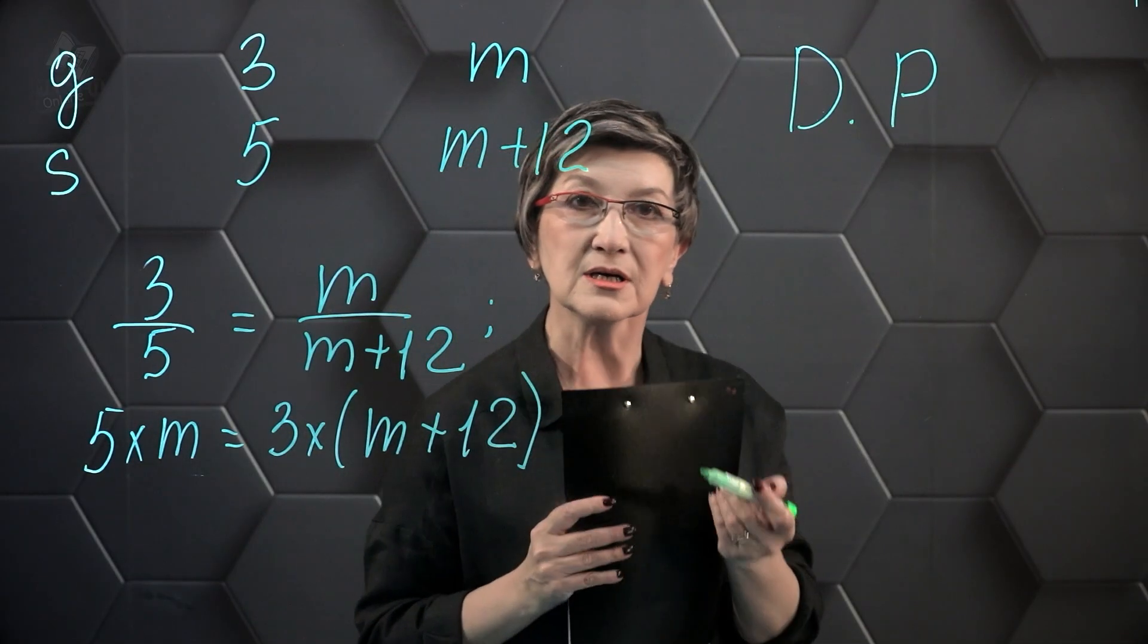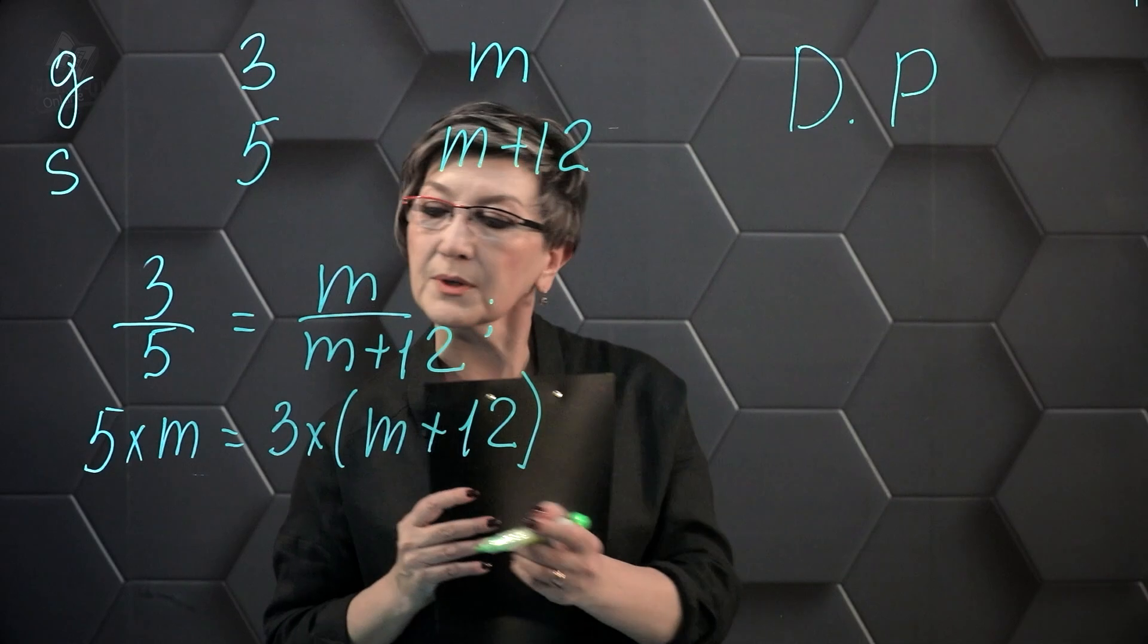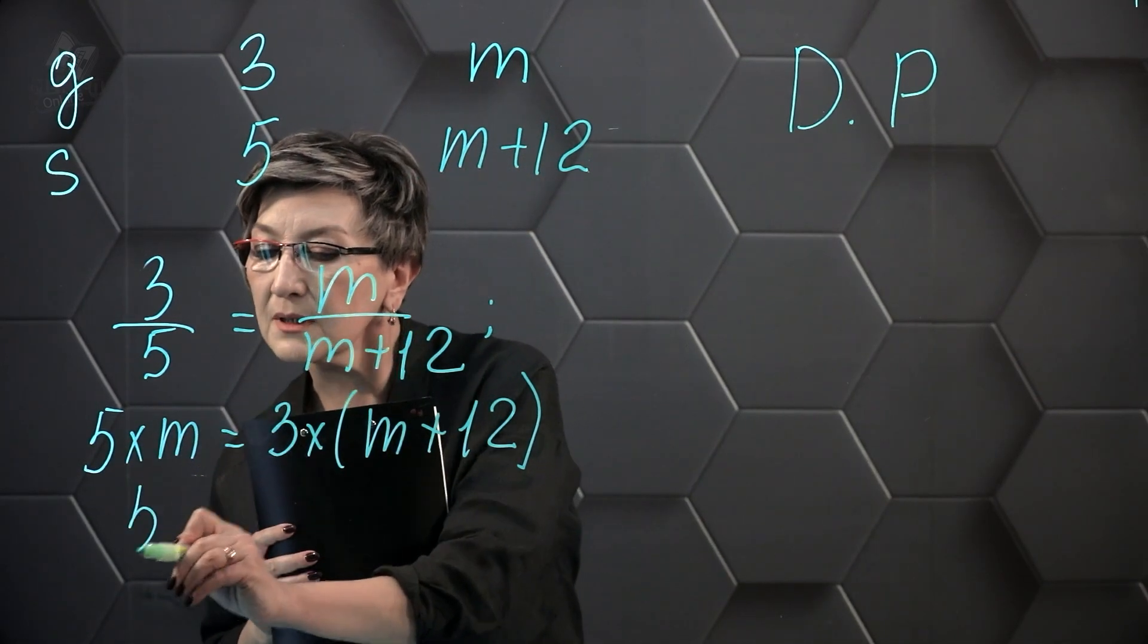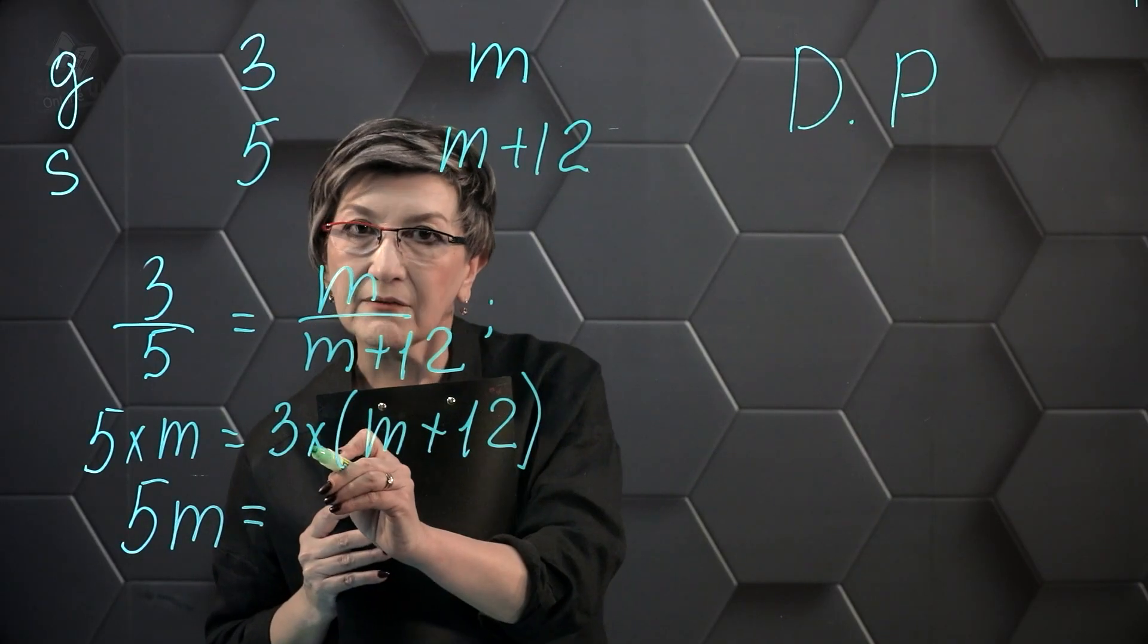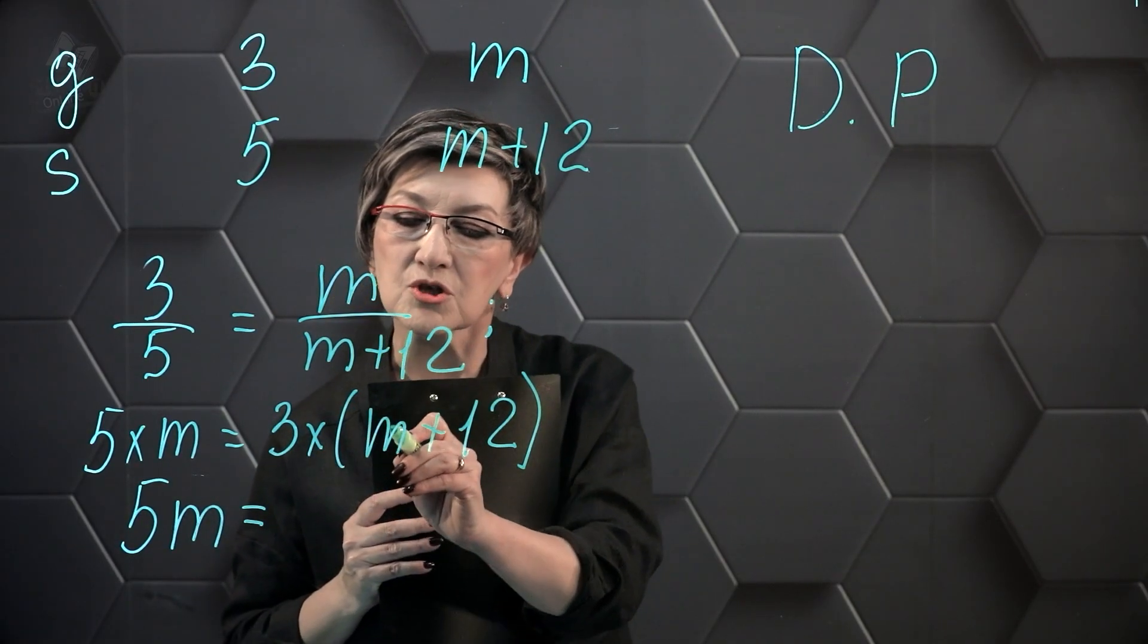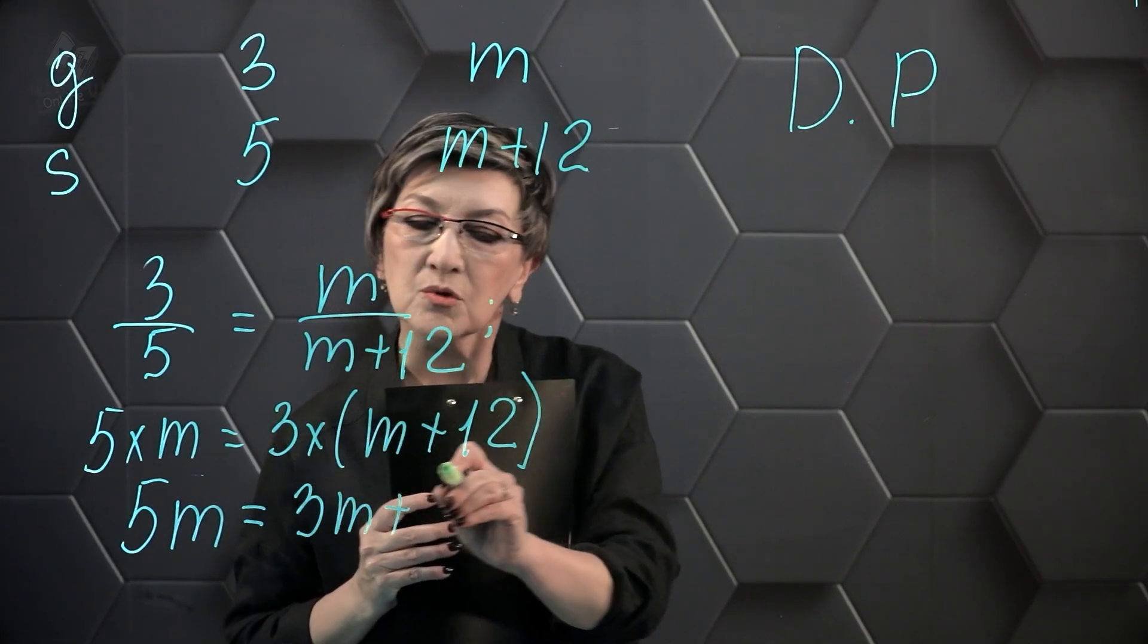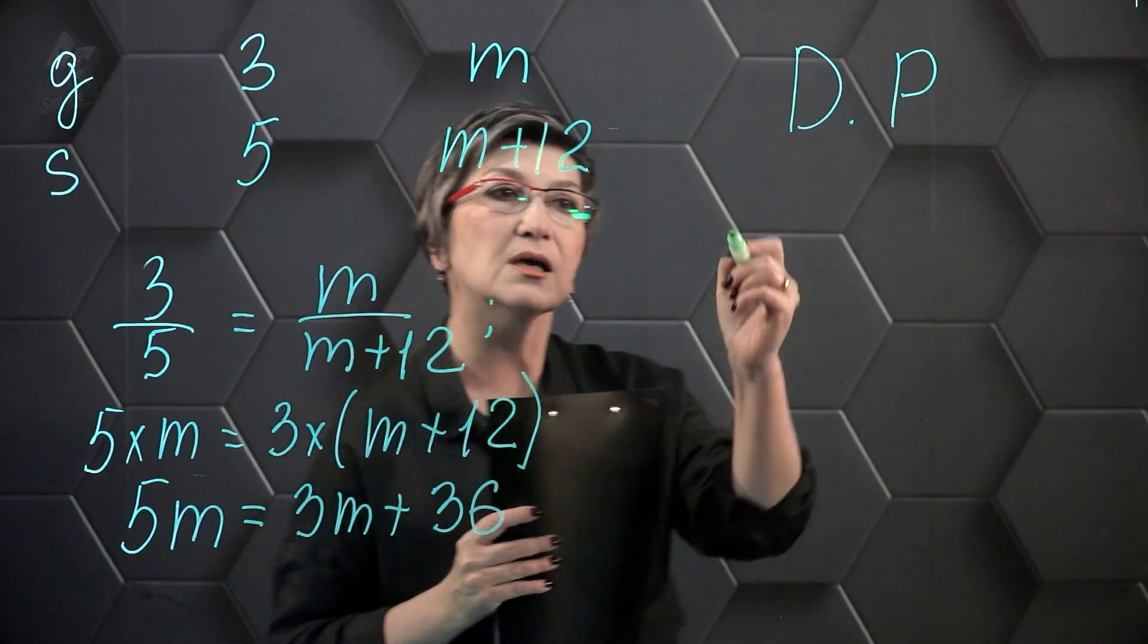In order to solve this equation, we need to open the parentheses. On the left side, I will write 5 times M as 5M. On the right side, 3 times M, 3M plus 3 times 12 is 36 as a result.